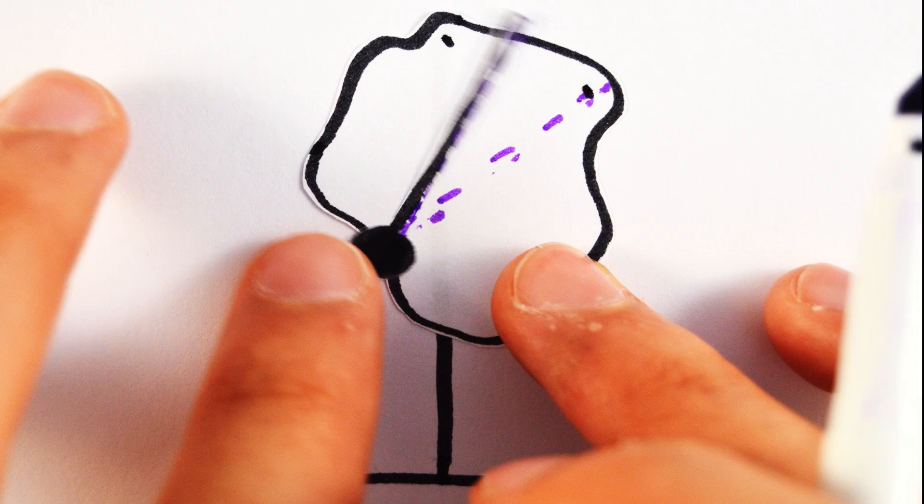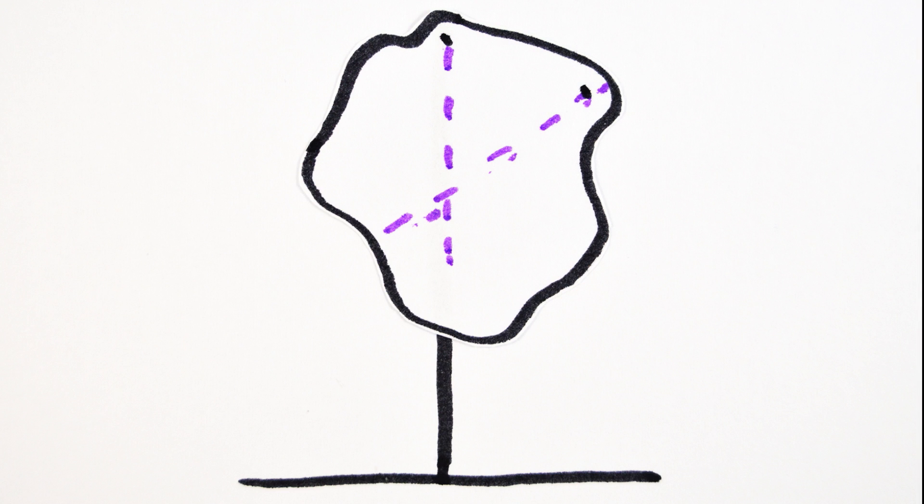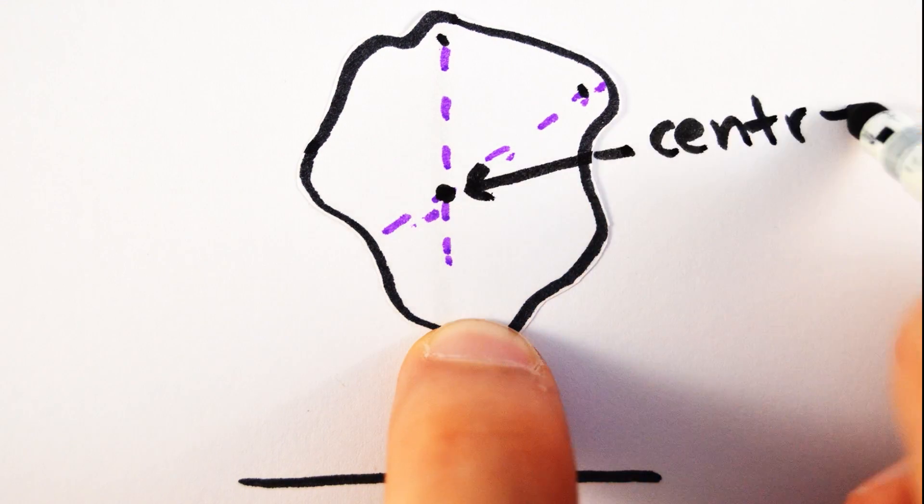By suspending the object from another point and repeating the process, you get two lines that intersect, and the point of intersection is the center of mass.